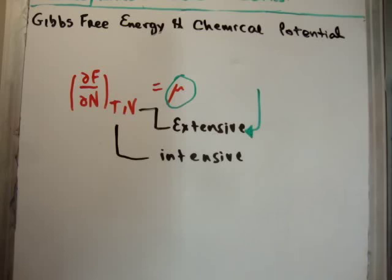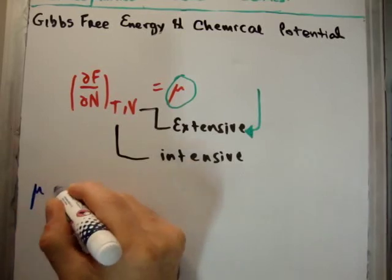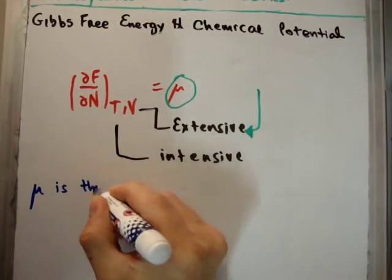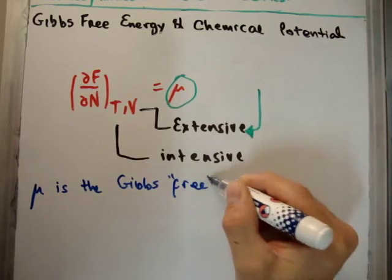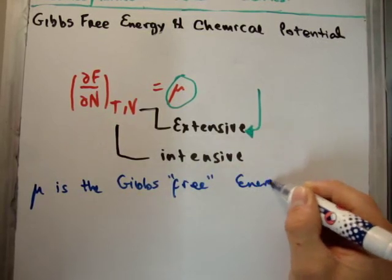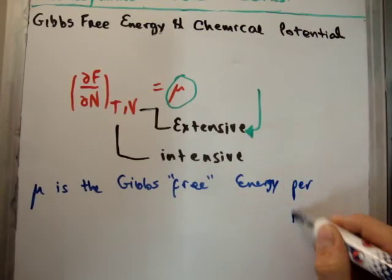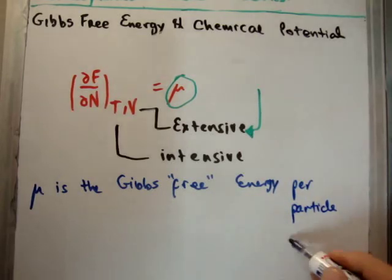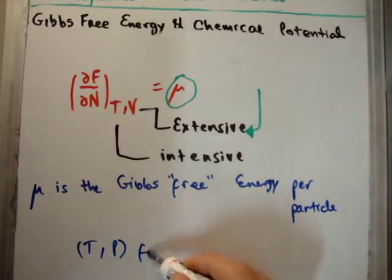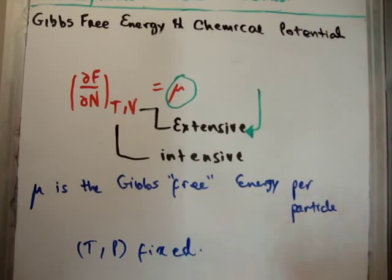So to summarize, then, what we say is that mu is the Gibbs free energy per particle, where we have T and P fixed. Great stuff. Okay, thanks for watching. Please pass it on to your friends. Subscribe to my channel. And you might also visit universityphysicstutorials.com.